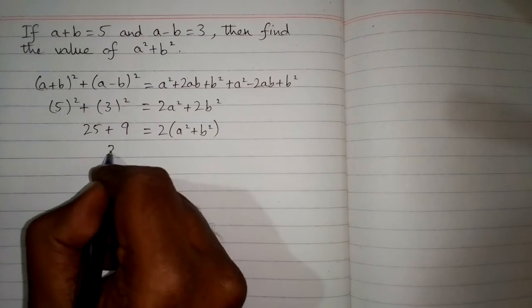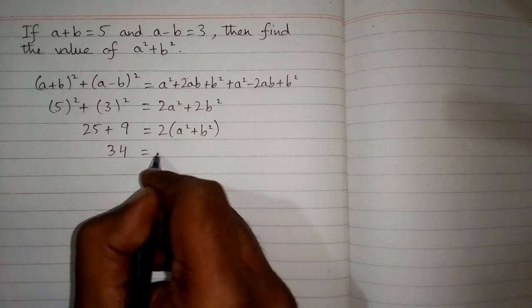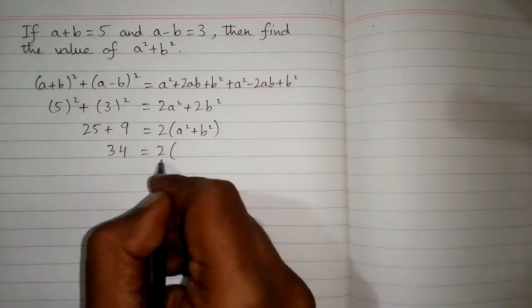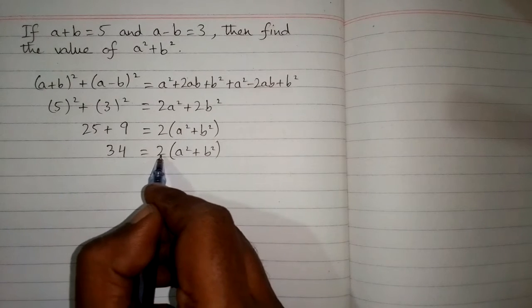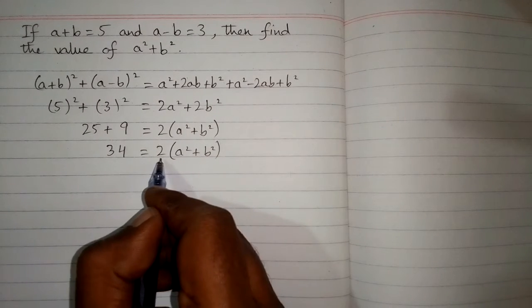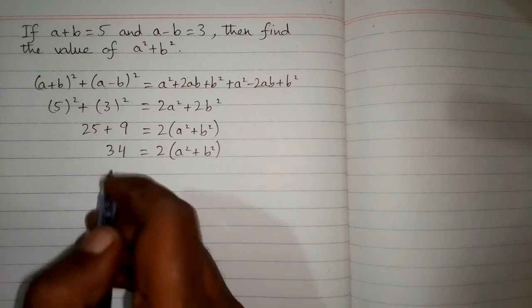So 34 is equal to 2(a²+b²). Now since this 2 is multiplying on this side, if we take this 2 on the other side of equation, so we will divide 34 by 2 and we have a²+b² on this side.